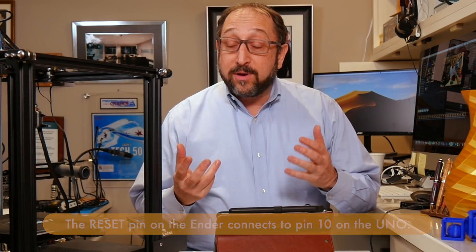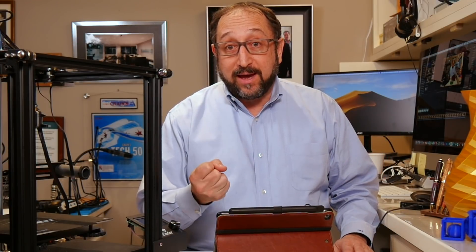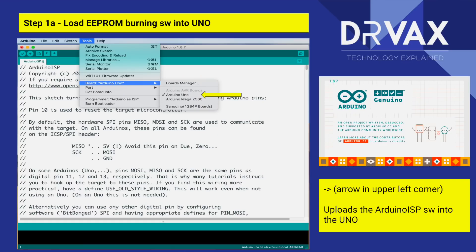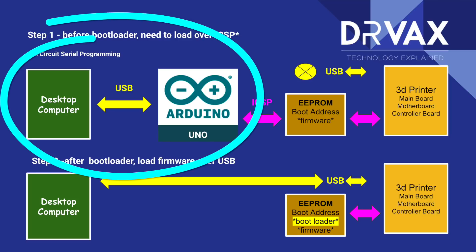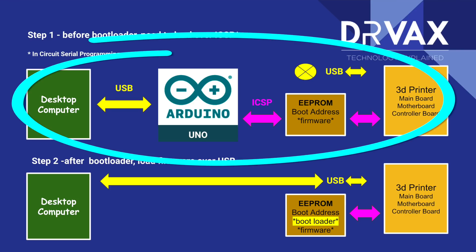Now that we have the UNO connected to the control board on the printer, we have three steps to take with the Arduino software. The first step is we're going to put a program on our UNO that turns it into a programmer for our Ender 5 — specifically, a computer able to flash an EEPROM with a bootloader. The second step, we're going to use the UNO as a device controlled by the Arduino software to flash the bootloader onto the Ender 5.